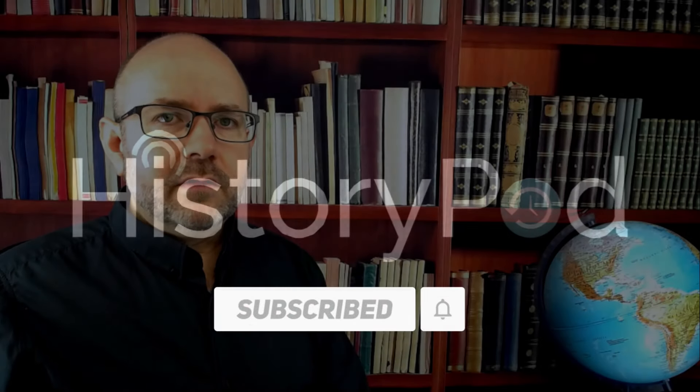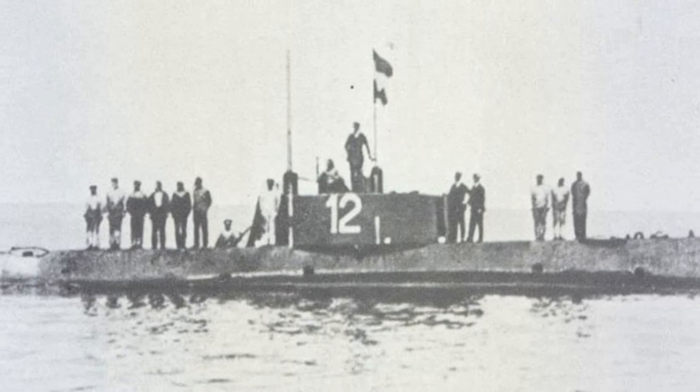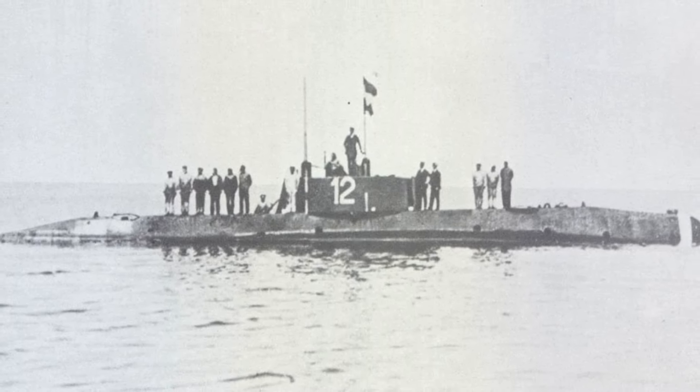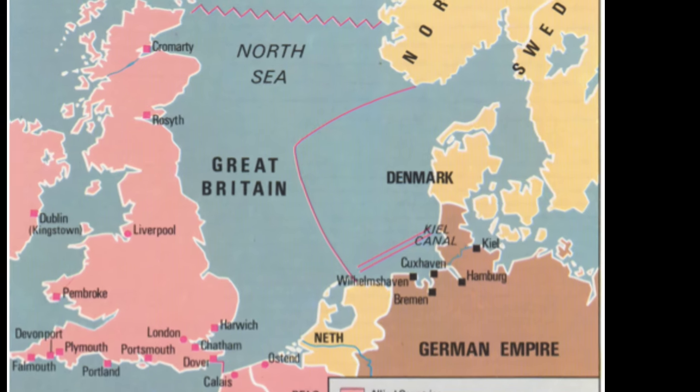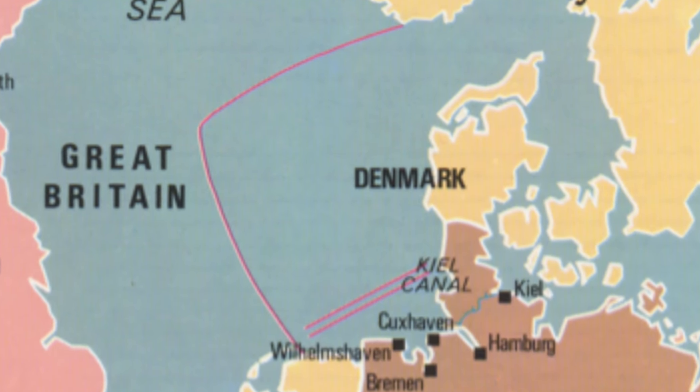Prior to the introduction of unrestricted submarine warfare, submarines adhered to cruiser rules, which required them to surface and provide warnings to merchant and passenger ships before launching an attack. However, faced with the British naval blockade and desperate to cut off vital supplies to the Allied forces, Germany opted for a more aggressive approach.